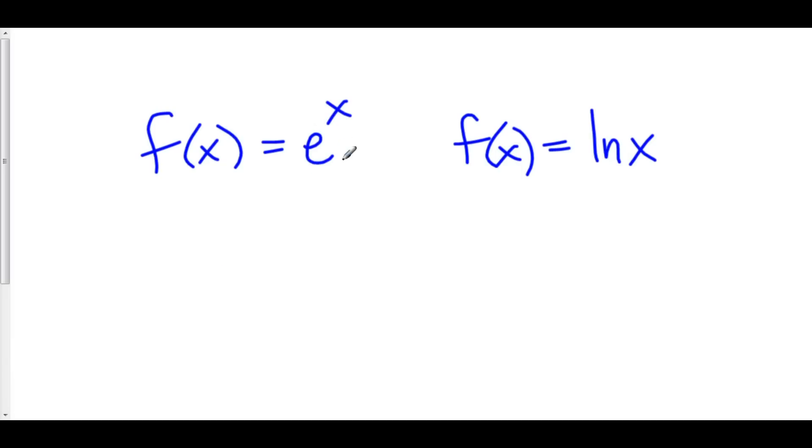Now, e to the x, that exists everywhere and that is a very continuous function. Natural log of x is a bit different. Natural log of x is continuous wherever it exists, and natural log of x exists when x is greater than zero.